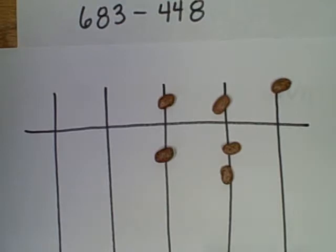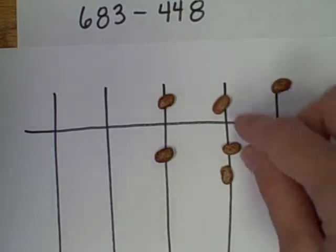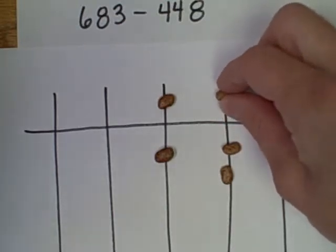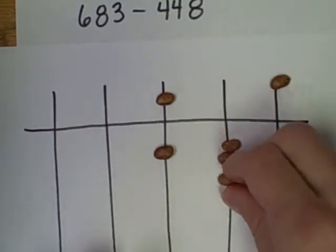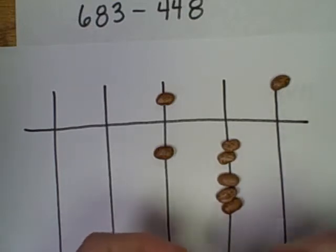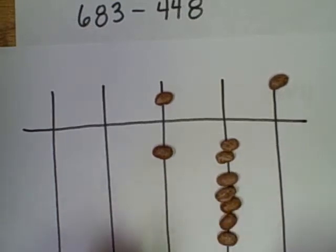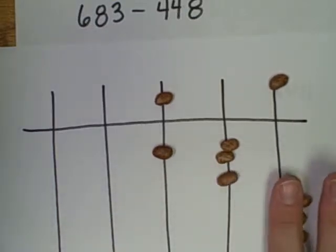Now I'll remove forty. I only have twenty here, so I have a fifty. I can take this fifty and exchange it for five tens. One, two, three, four, five, and remove forty, four tens.